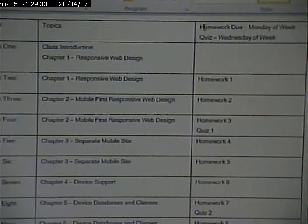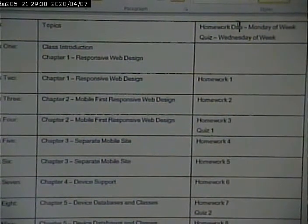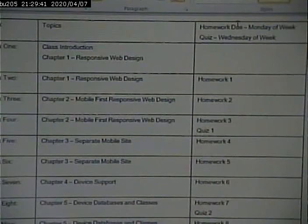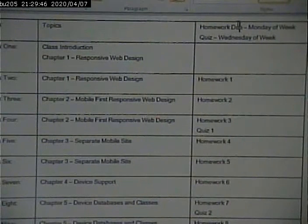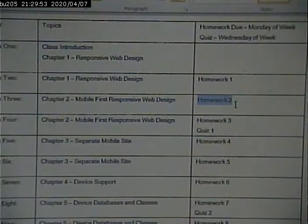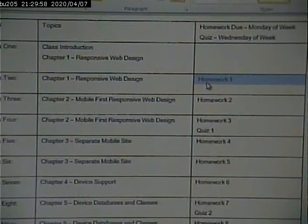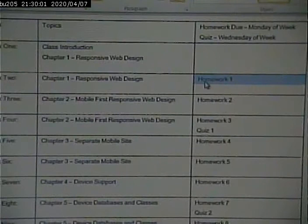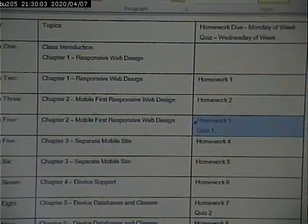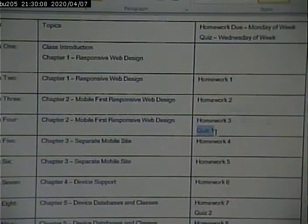The homework will be due Monday of the week, except for next week, of course. We have Labor Day off, so it won't be due next Monday, but it will be due Wednesday instead. And the quizzes will be Wednesday of the week. So for example, this homework 2 assignment will be due the Monday of week 3. In this case, homework 3 will be due Monday of week 4, and the quiz will be on Wednesday of week 4.